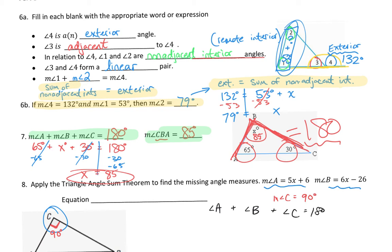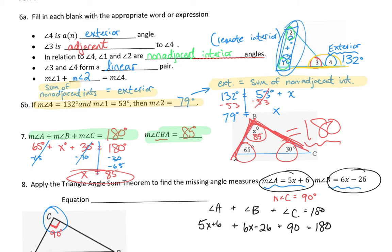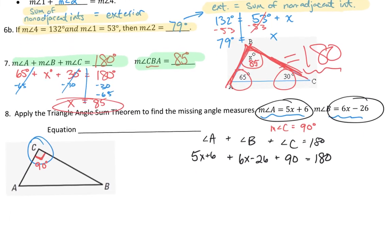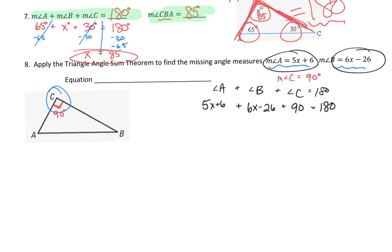We can substitute. Angle A is worth 5x plus 6, angle B is worth 6x minus 26, and angle C is 90 degrees. I'm going to combine like terms: the x terms combine to make 11x, and the constants are positive 6 minus 26 plus 90. Using a calculator: 6 minus 26 plus 90 equals 70. So 11x plus 70 equals 180.